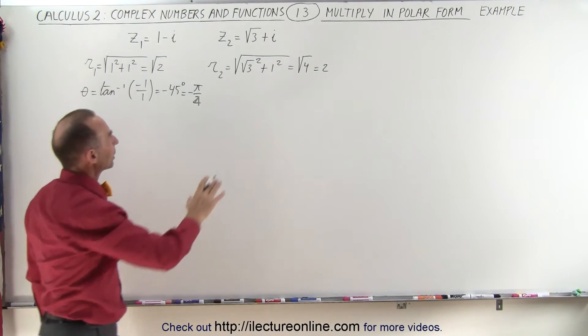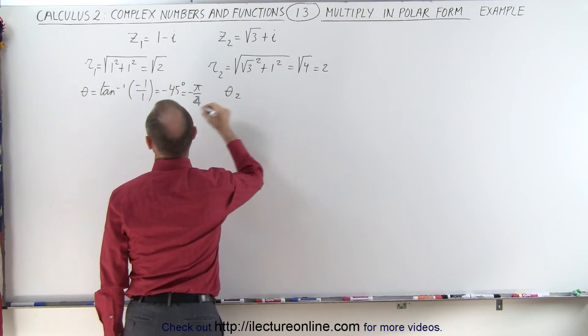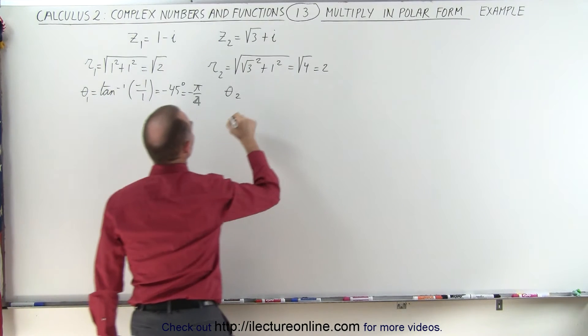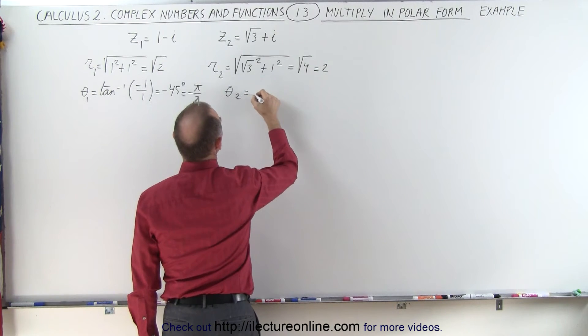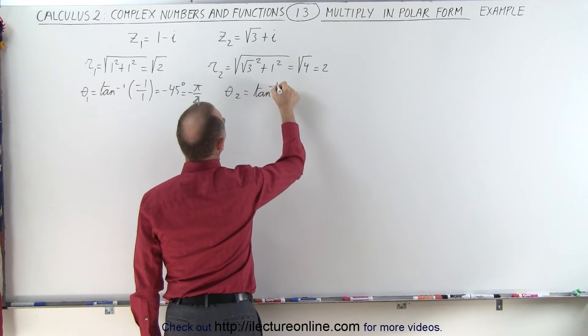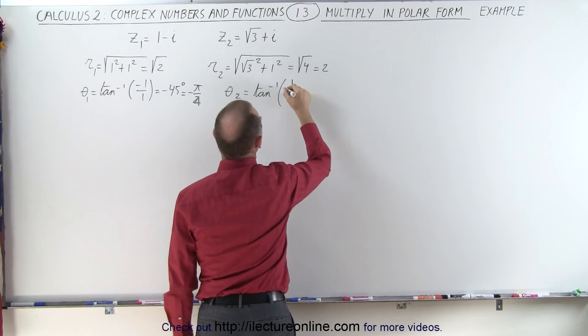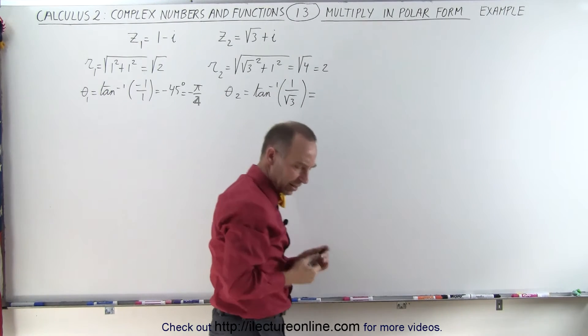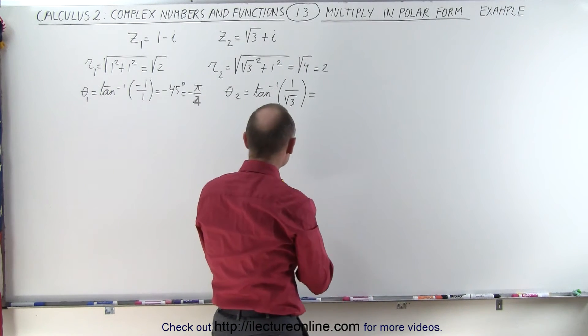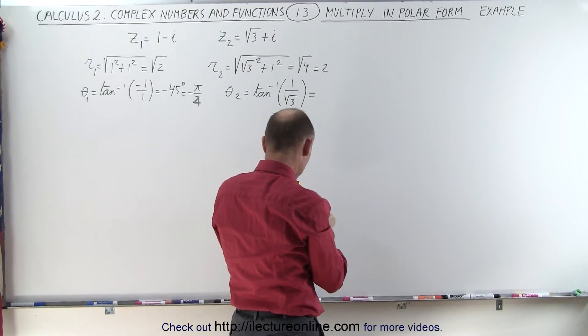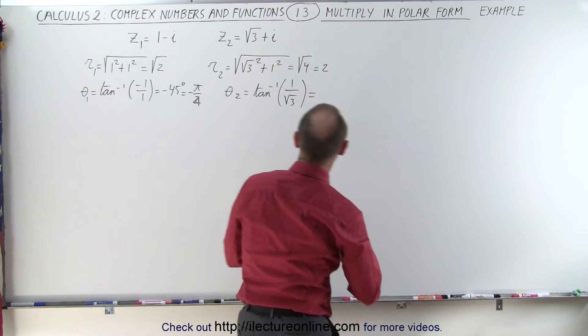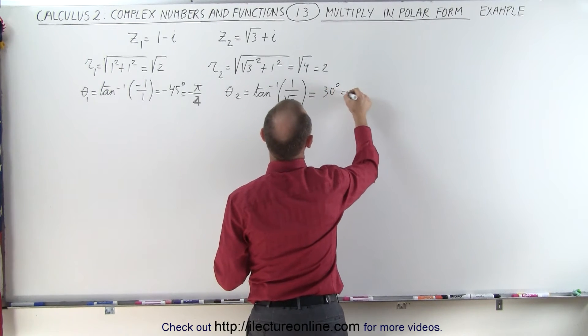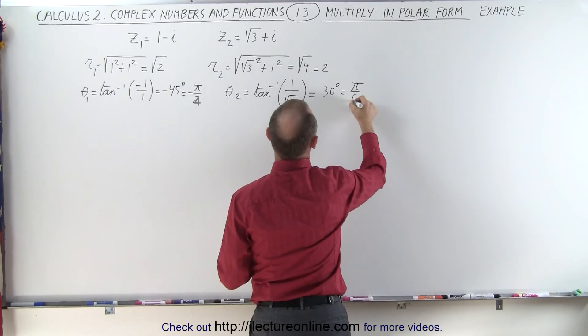Now for the angle on this one we can say that theta sub 2, and I should call this theta sub 1, is equal to the arc tangent of B, which is 1 over the square root of 3. 1 divided by square root of 3, take the inverse tangent, yes, 30 degrees, that was equal to 30 degrees, which is equal to pi over 6.